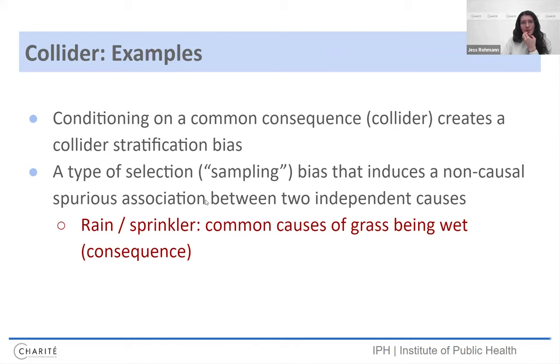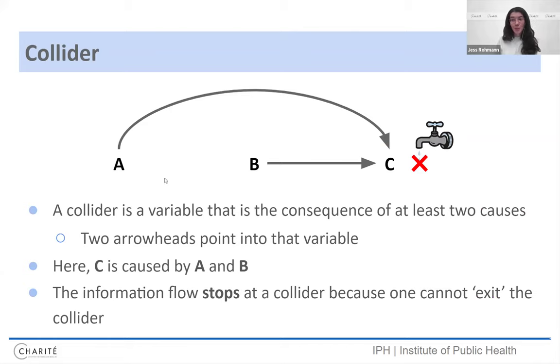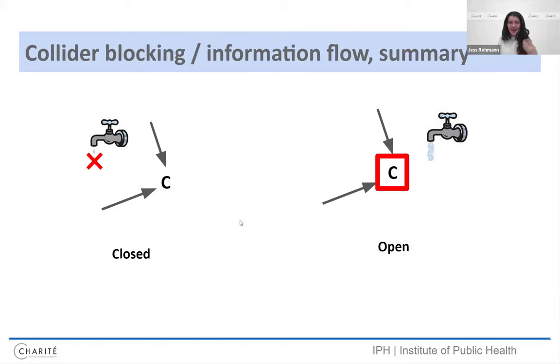And one of the examples you'll see a lot in the literature is the rain and sprinkler example. So if you know that the grass is wet, right, there's two ways for the grass to be wet. Either it could have rained or the sprinkler was on. But if you know it didn't rain, the sprinkler must have been on. That's what this is. If I have some information here, if I know the grass is wet, right, and I know it didn't rain, the sprinkler must have been on. So because I know something about B and I know what C is, I look in the stratum of the grass is wet. I now have information about A, even though we said before A and B were not related. So this takes a bit to wrap your head around. I have some extra examples with me. Here's one more practical one.